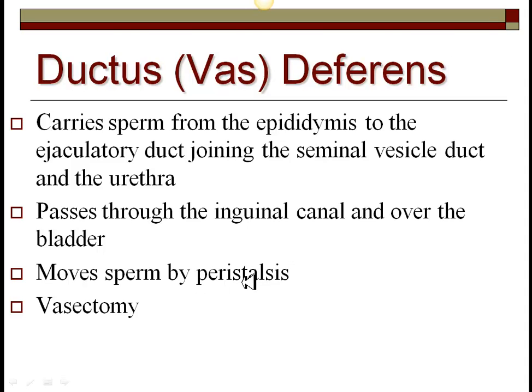Peristalsis is what moves sperm along, just like what's moving food along in your stomach. A vasectomy is simply where you cut the vas deferens, which will prevent sperm from passing out — very effective at preventing pregnancy, though not 100 percent, as there can be errors and it can regrow. There are reversal surgeries available. If you have a vasectomy and decide later you want kids, there is a micro vasectomy reversal nowadays.